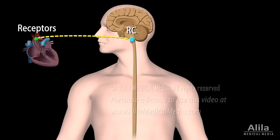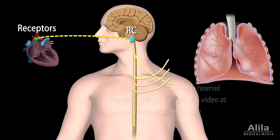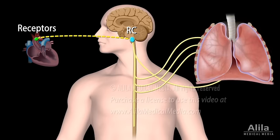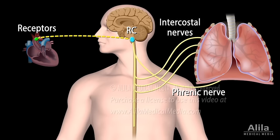The fibers of these neurons descend to the cervical and thoracic spine where they synapse with motor neurons. Motor neurons then travel in several nerves to respiratory muscles, changing the way these muscles contract, adjusting thereby the rate and depth of breathing to suit the body's needs. Of most importance are phrenic nerves, which control the diaphragm, and intercostal nerves, which innervate intercostal muscles.